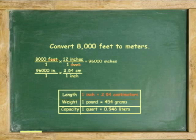96,000 inches over 1 times 2.54 centimeters per 1 inch. Cancel inches. Multiply 96,000 times 2.54. You get 243,840 centimeters.